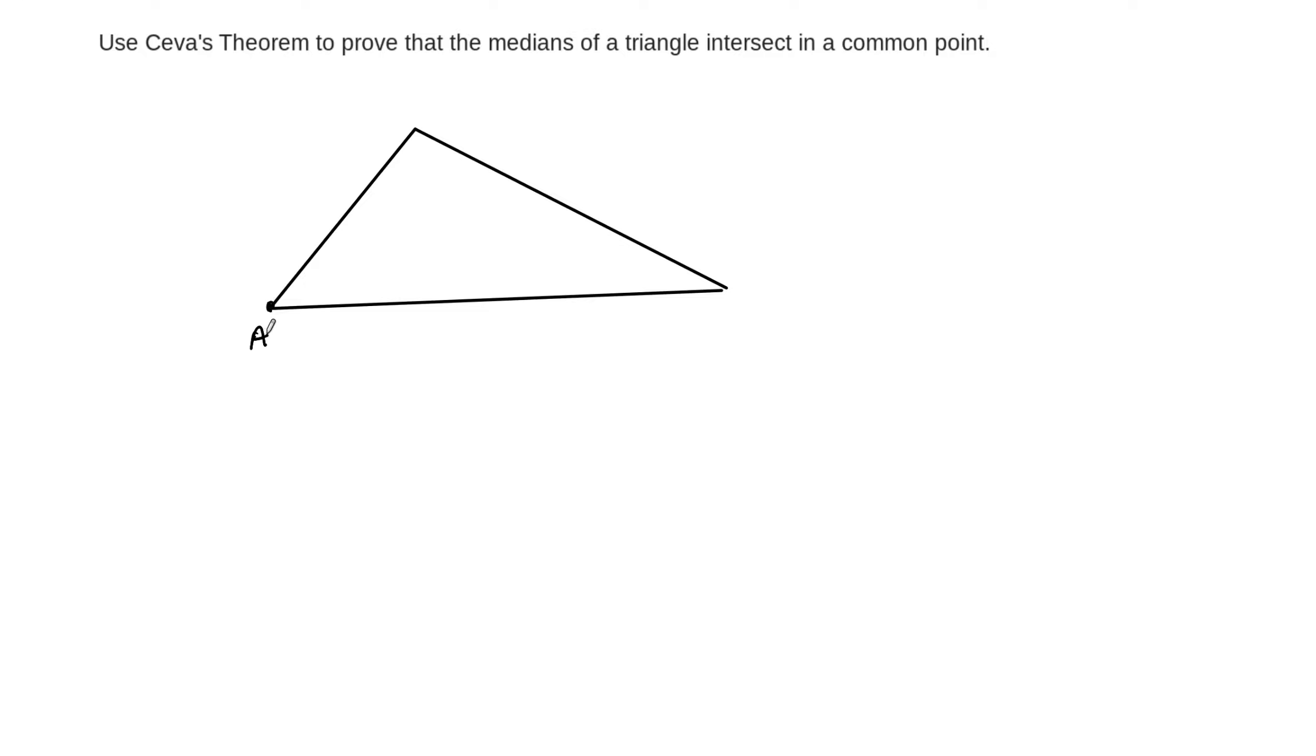I'm going to label these vertices A, B, C in this direction. And at this point, the median, remember, the medians of a triangle are the segments, the line segments, that connect the midpoints of each side. So let's call this one E. So the idea here is that this is the midpoint, so it divides this evenly.